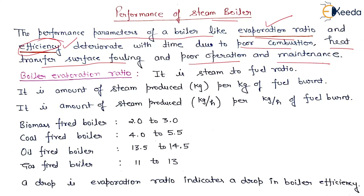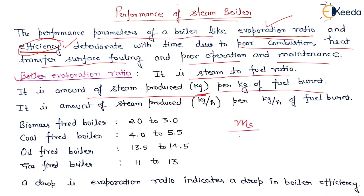Let's see the evaporation ratio. Evaporation ratio is basically the steam-to-fuel ratio — it is the ratio of mass of steam generated from the boiler to the mass of fuel utilized to generate that steam. That means it is the mass of steam divided by mass of fuel. This is the evaporation ratio.